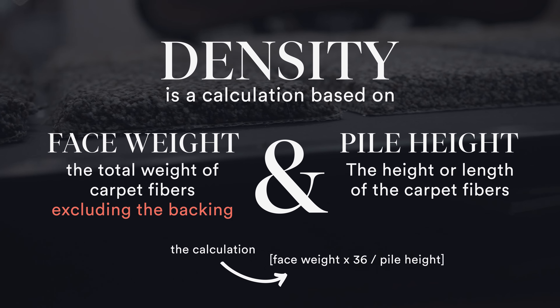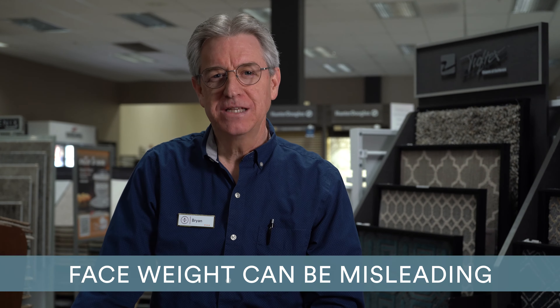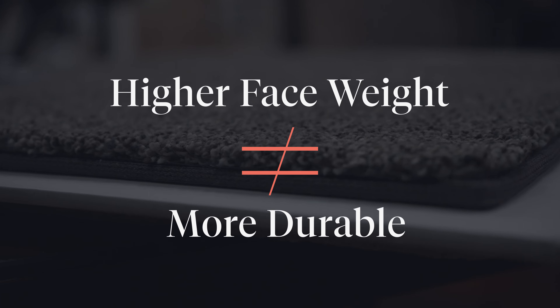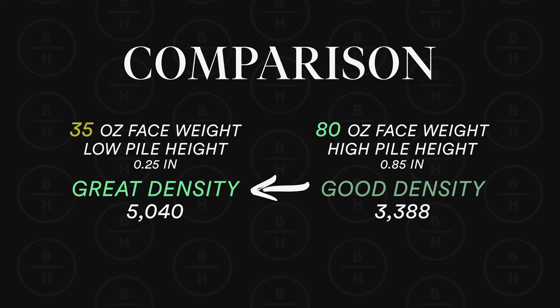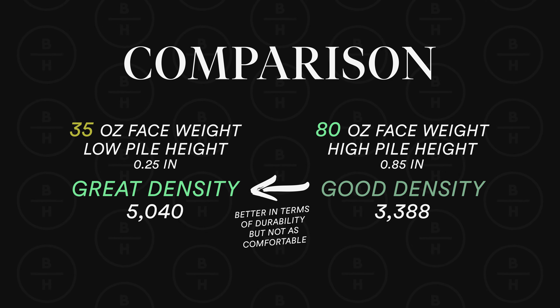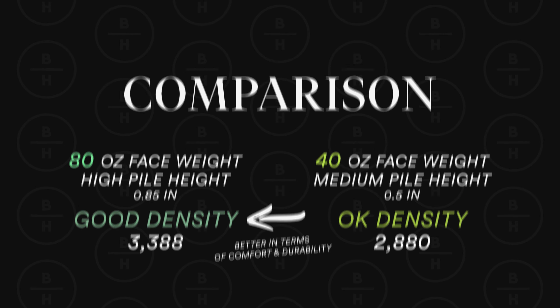Density is a calculation based upon the face weight and the carpet pile height. Face weight is the amount of fiber per ounces in a square yard. When a salesperson says a carpet has an 80-ounce face weight, you might think that's the most durable carpet out there, but face weight and durability do not necessarily mean the same thing. A carpet with a 35-ounce face weight and a lower pile height can have good density, last longer, and resist matting. A higher pile height might play into your comfort level, but keep that in mind when thinking about face weight.